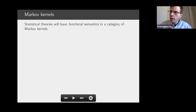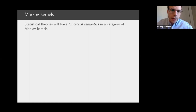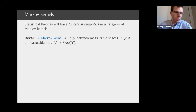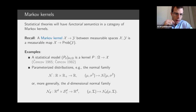Questions will be taken at the end. Statistical theories will have functorial semantics in a category of Markov kernels. Formally speaking, a Markov kernel is a function from a measurable space into the space of probability distributions on another measurable space, with the intuitive interpretation of being a probabilistic function: to every point in the domain, you assign not just a single point in the codomain, but a probability distribution over the codomain.